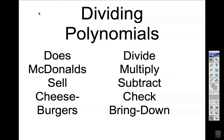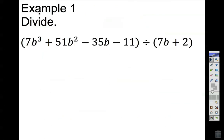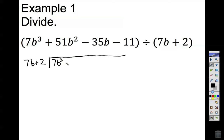Let's get started with the first example. We are asked to divide 7b cubed plus 51b squared minus 35b minus 11 — that four-term polynomial — divided by the binomial 7b plus 2. The first polynomial goes inside the division, and the second part, 7b plus 2, goes outside.